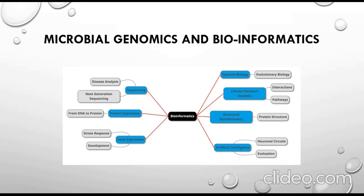Protein expression can also be studied — for example, how proteins are made and how many proteins are produced from a particular gene or DNA. Sequences are also important: once we sequence the particular genome, we can check for disease. Most of the time we use next-generation sequencing for this purpose.